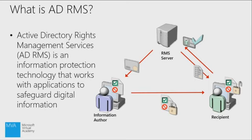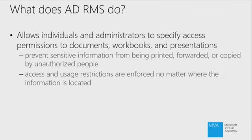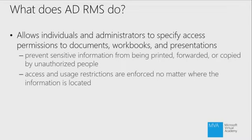That protection follows the document anywhere. The recipient, having access to my RMS infrastructure through various means, will be able to verify that the document is accessible to them but be restricted in what they can do with it. It allows individuals and administrators to specify access permissions to documents, workbooks, presentations, and emails. Access and usage restrictions are enforced no matter where the information is located — even outside of my organization, the recipient is still subject to those restrictions.